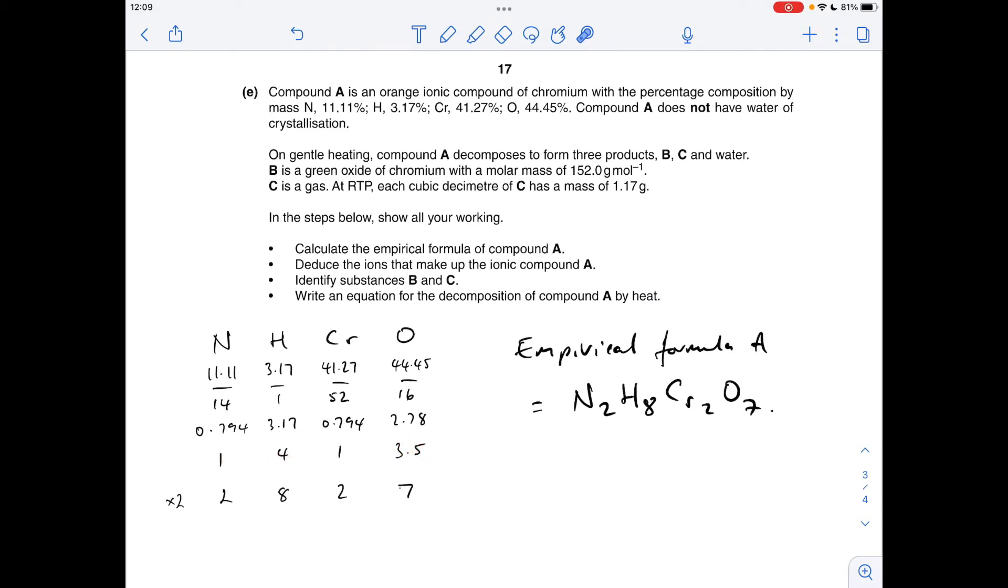Obviously we can't have something 0.5, so we double it all out, and we get a 2 to 8 to 2 to 7 ratio of atoms. So therefore, the empirical formula of A must be this here.